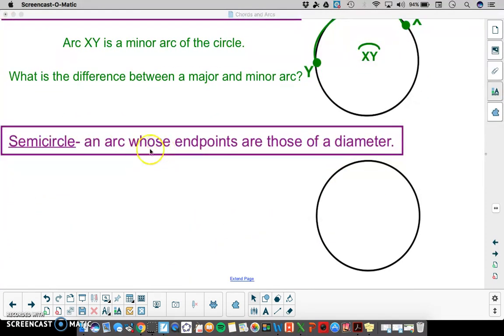Lastly, a semicircle is an arc whose endpoints are those of a diameter. So if we look at this arc here, its endpoints X and Y would be a diameter of that circle, which means it would pass through the center. We would need to name that arc with three points. So we would name that arc XCY.